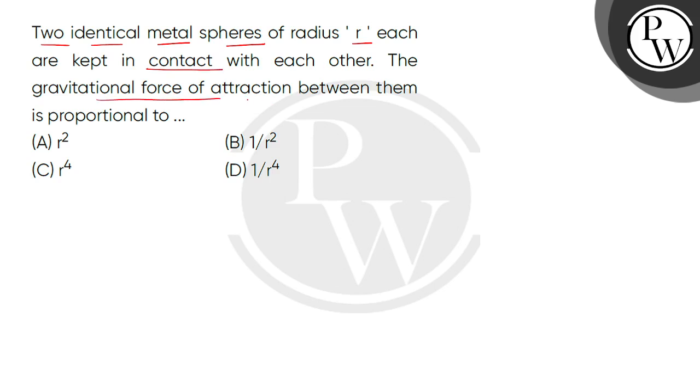The gravitational force of attraction between them is proportional to... So children, we have given two identical metal spheres. They are made of the same metal and the radius is R. And they touch one another.